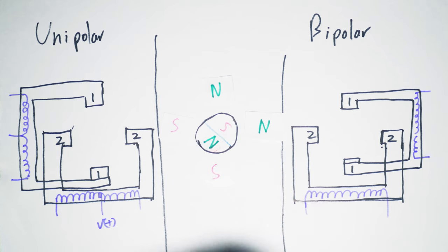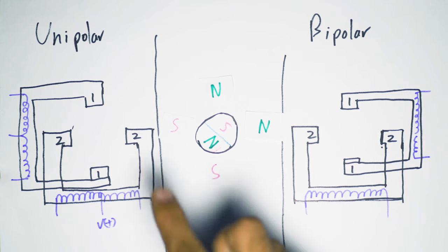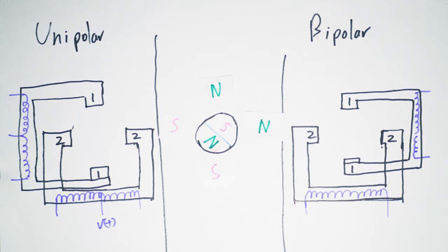Now this technique is called half stepping and it falls under a technique called microstepping. By using microstepping, we can get a lot more rotational resolution, but it comes at the cost of torque.